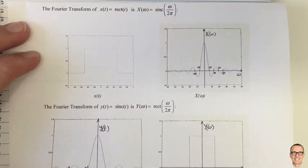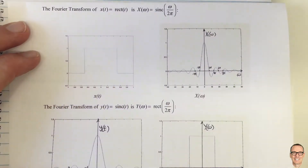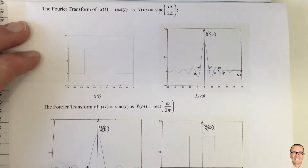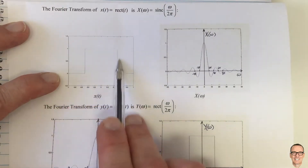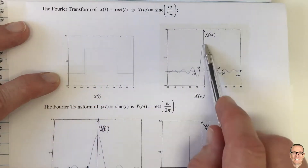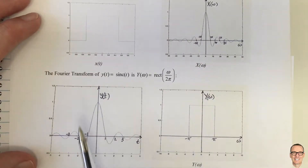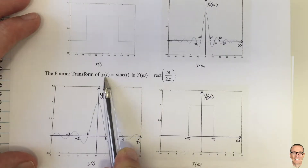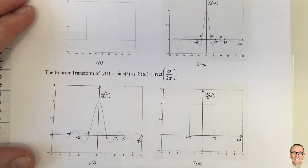We're going to look at some Fourier transform examples and consider the rect function, whose Fourier transform is the sinc. We know that this is a pair — the rect function is the square in the time domain and the sinc in the frequency domain. We also know, because of the duality property, that the Fourier transform of a sinc in the time domain is a rect in the frequency domain.